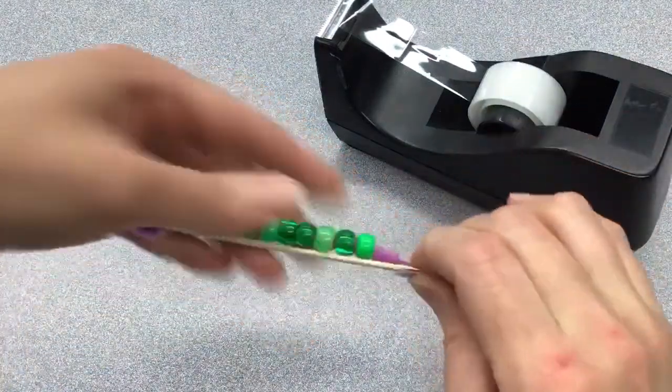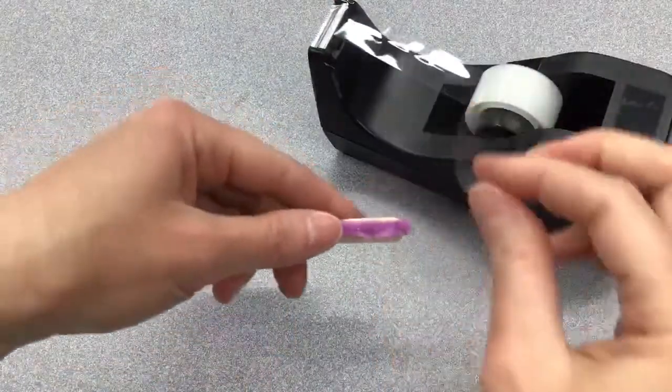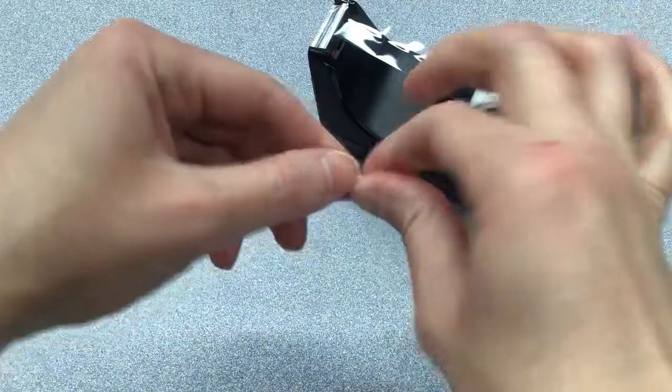And this will both help to keep the pipe cleaner in place and it'll also cover up the pointy end of the pipe cleaner, so you won't be poking yourself when you're holding your fidget tool.